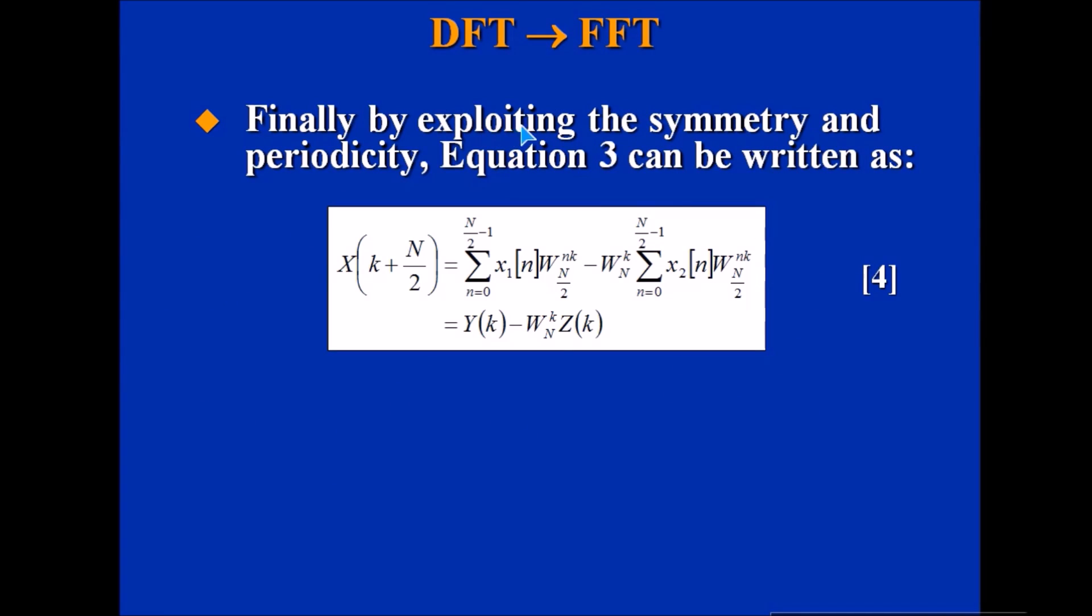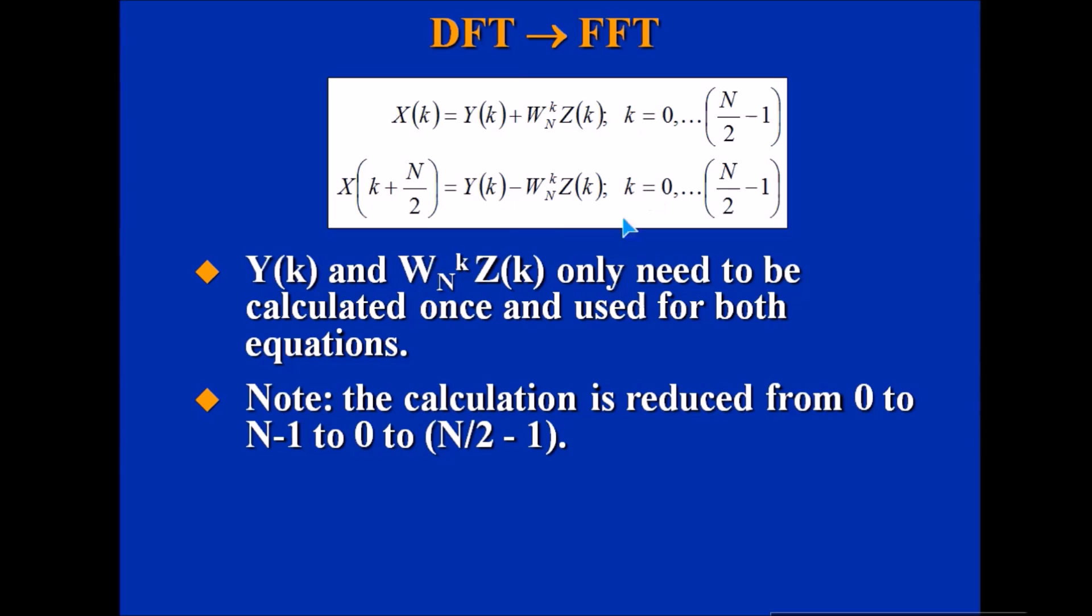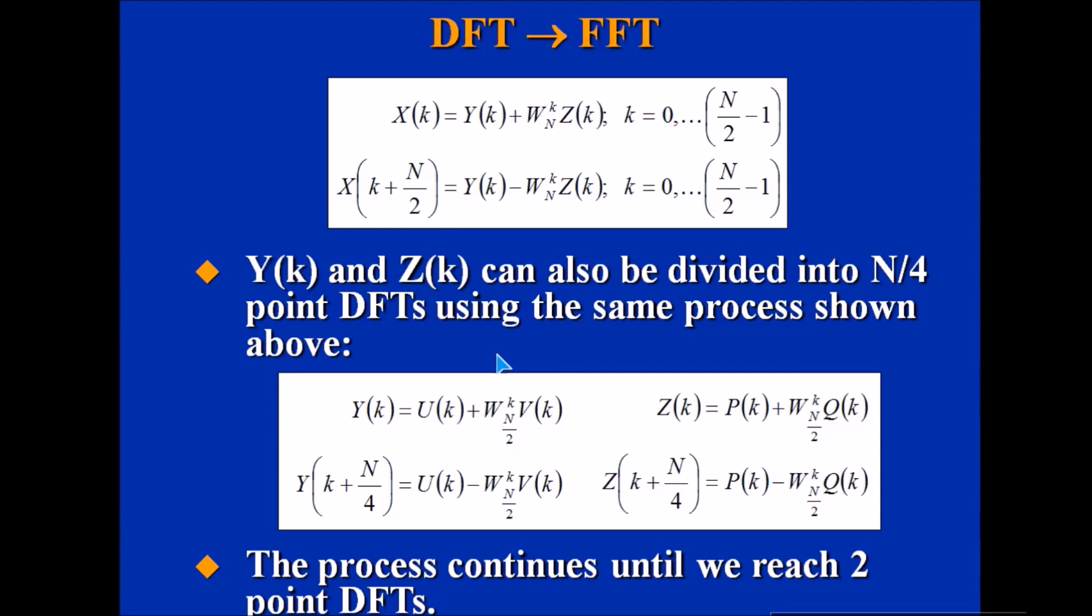By exploiting the symmetry and periodicity, the equation reduces to this. Once we have this, Y(k) and the Z(k) preceding the twiddle only need to be calculated once and used for both equations. This is important - we don't have to calculate it again and again. The calculation is reduced from 0 to N-1 to 0 to N/2-1. This is a huge improvement.